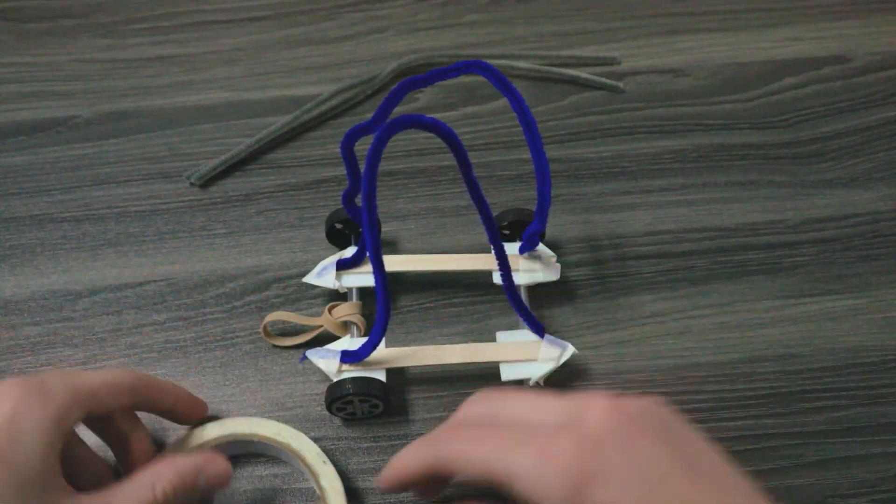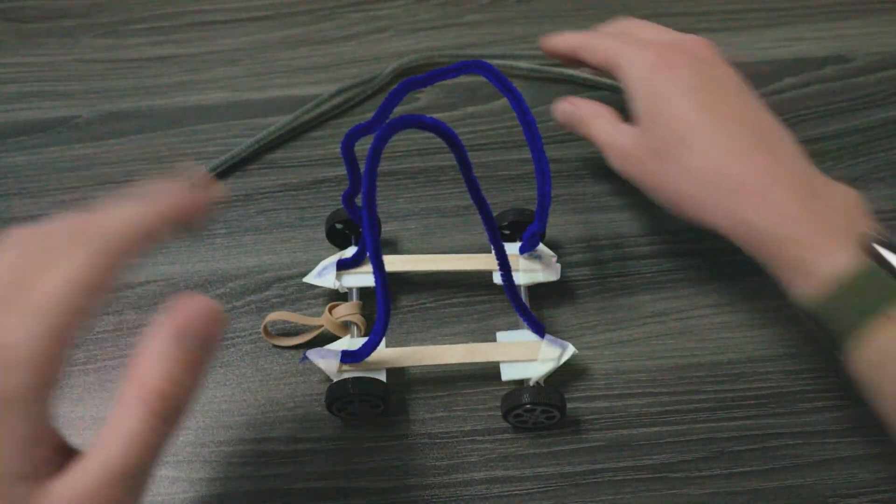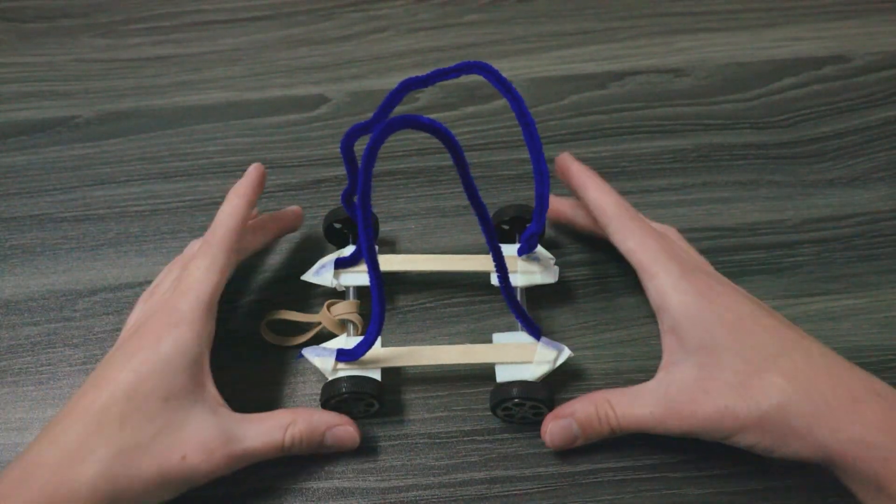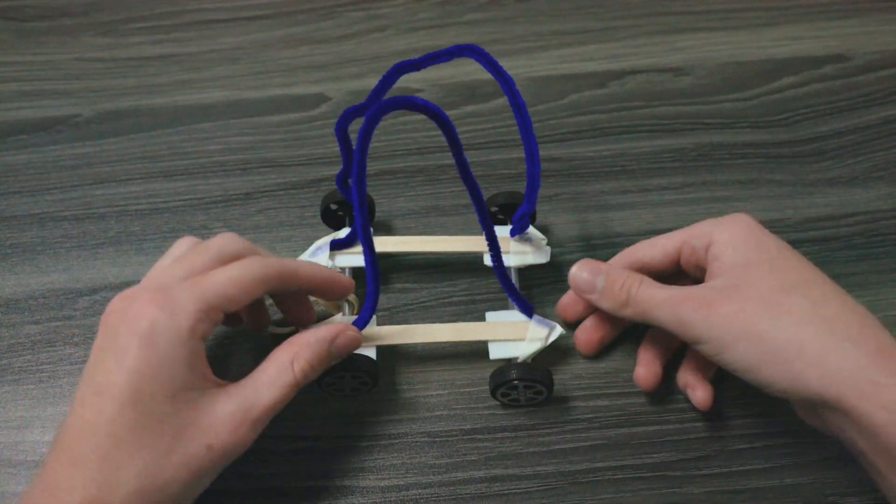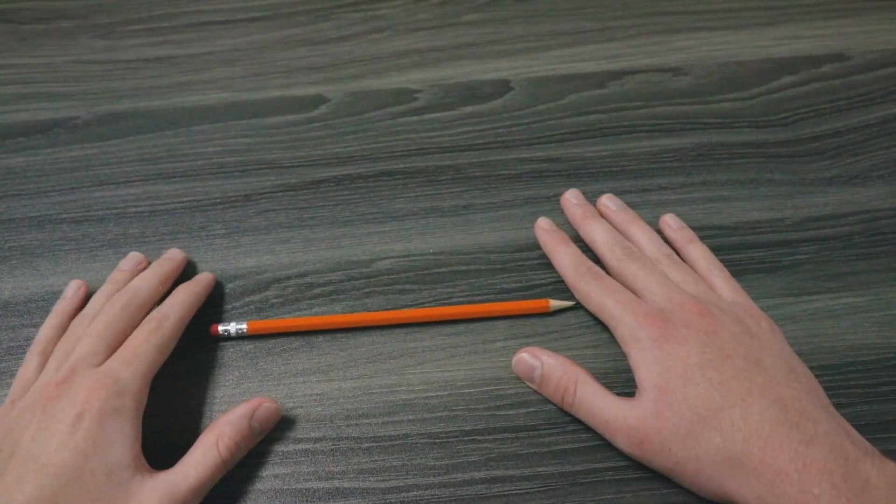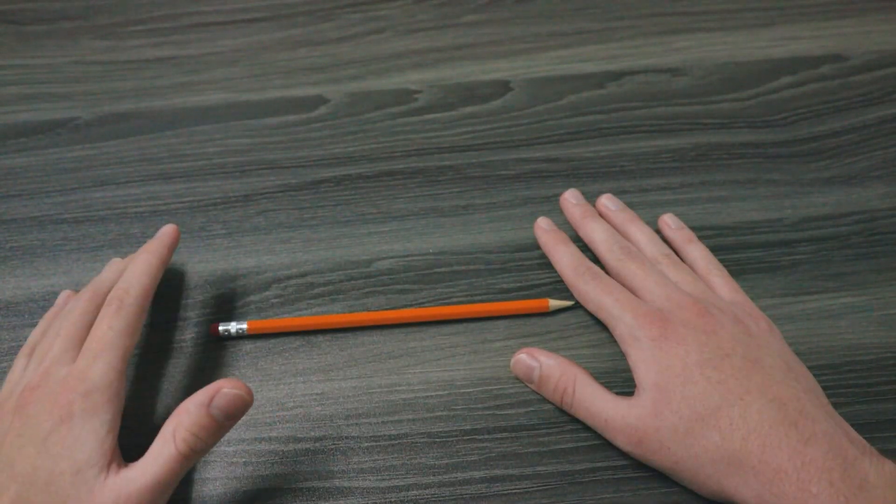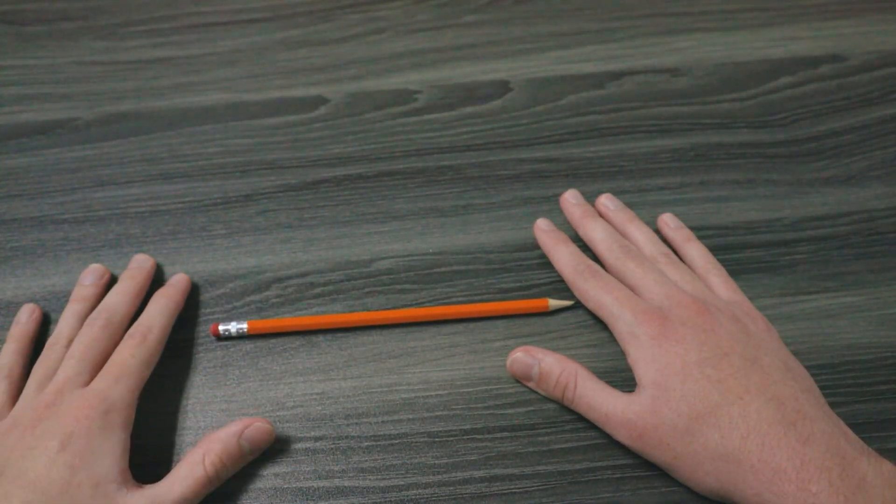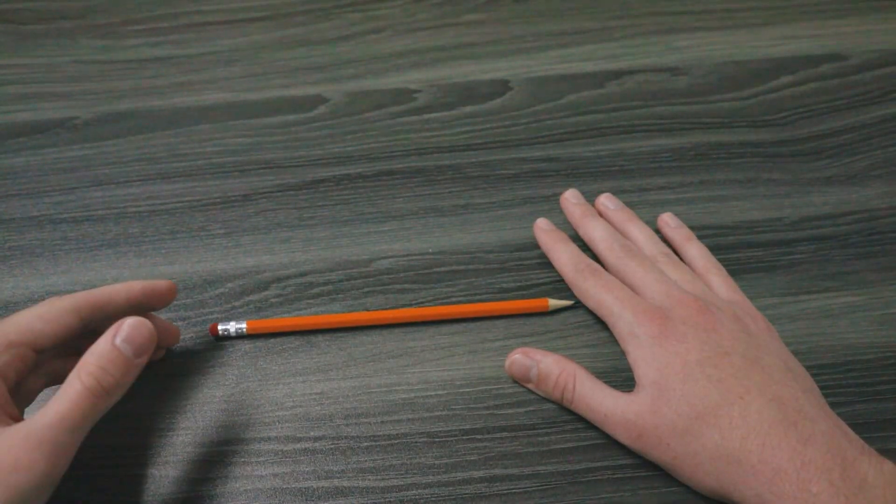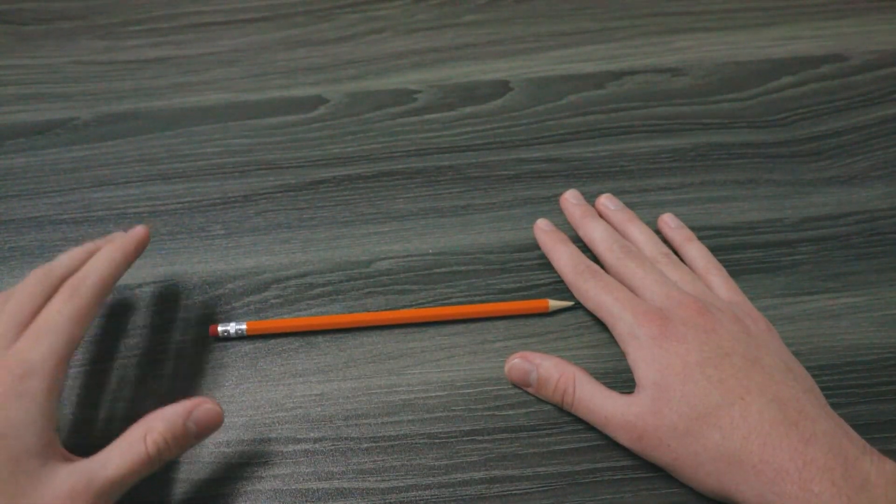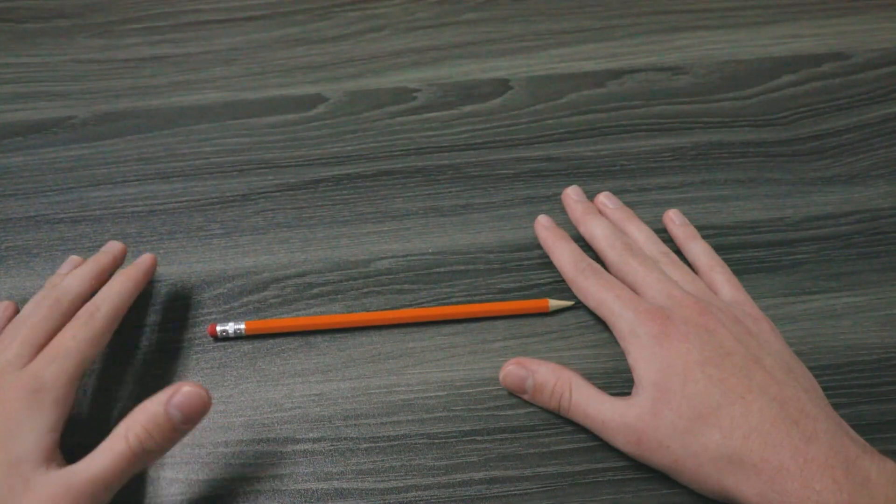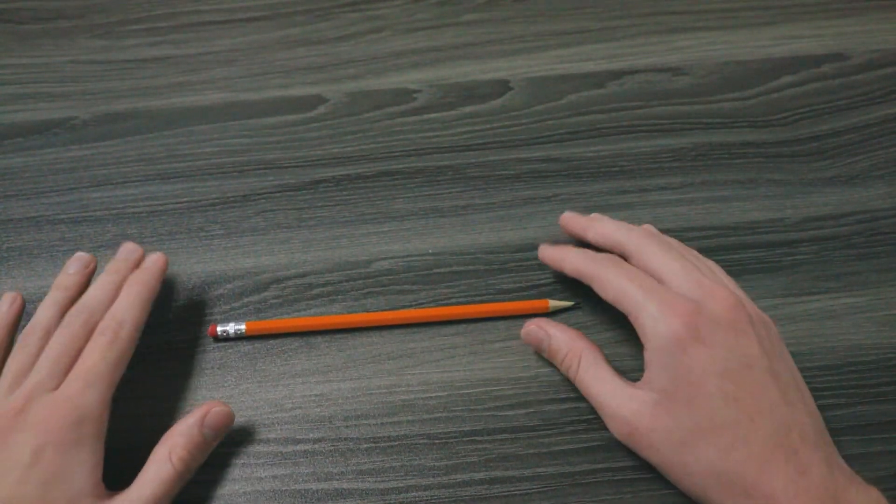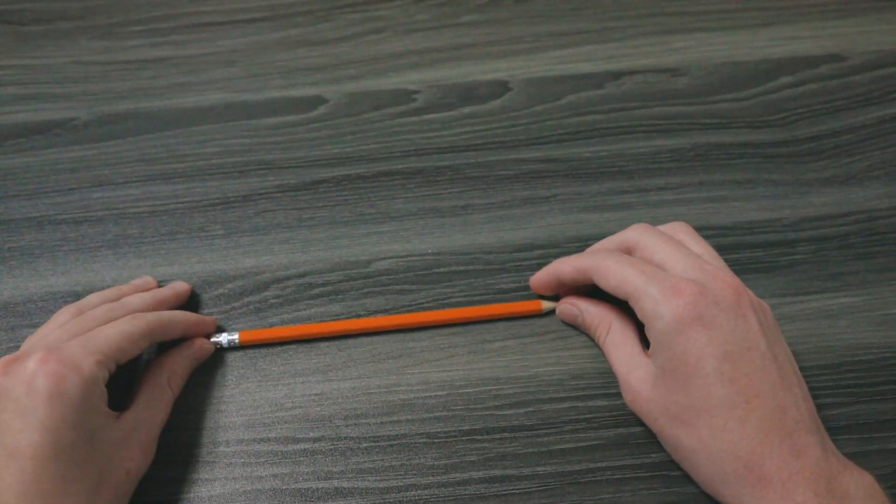This here is my very simple design, but you can encourage your students to get creative with this to build the type of car that they like. To help us launch our car we're going to build a super simple launching station. On the desk we are working on, you can also build this on the floor, and you can have students build this for their own launcher for their table group or you can build multiples for students to race for the whole classroom.